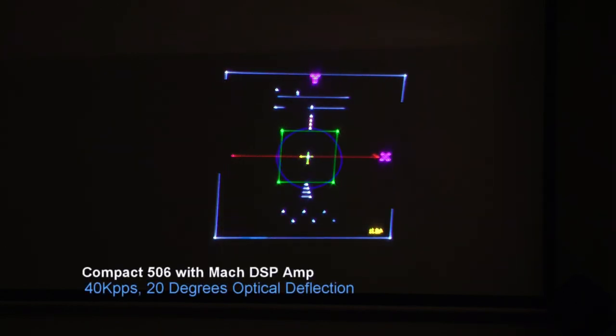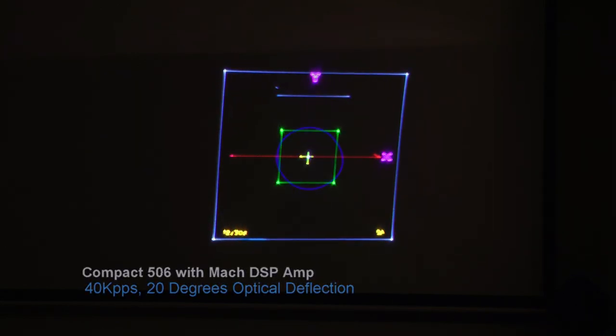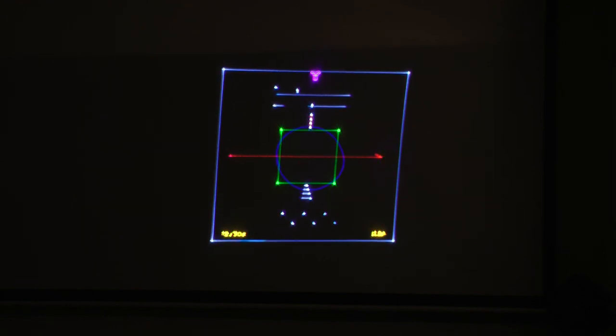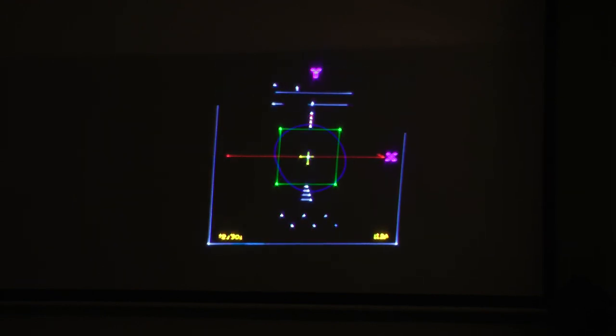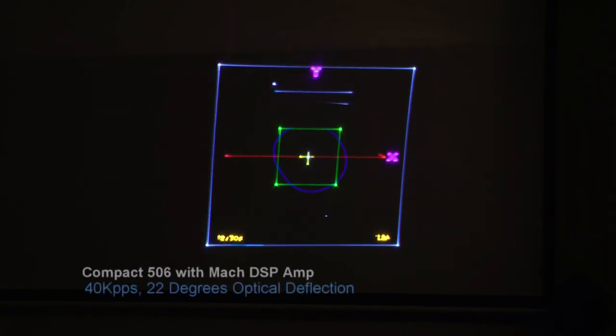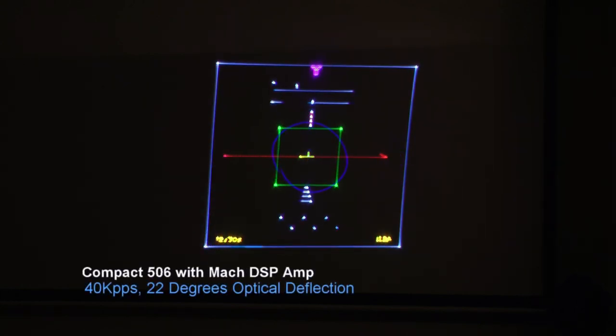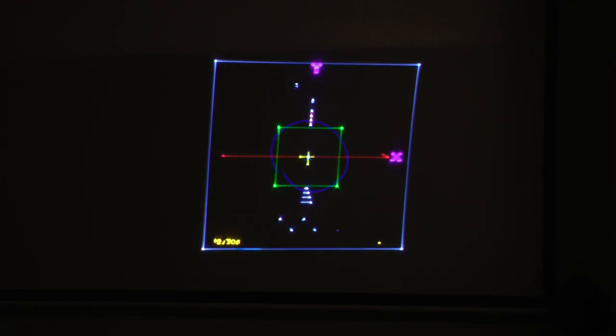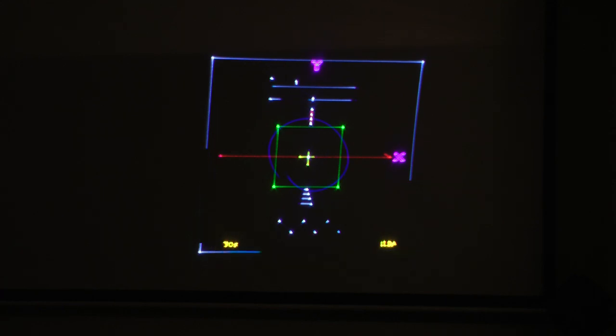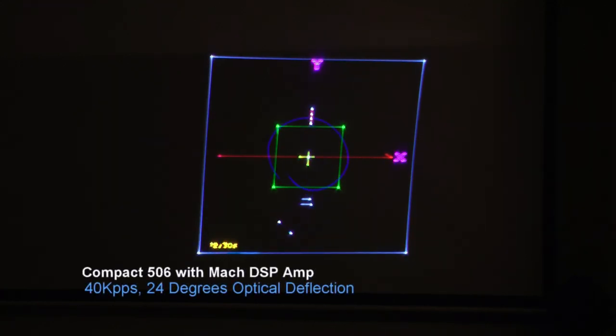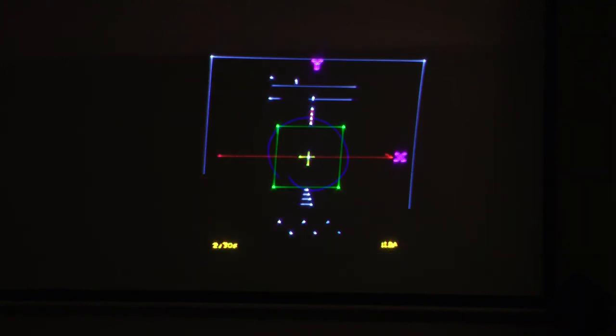20 degrees optical. 22 degrees optical. 24 degrees optical. We've got some skewing of the circle. Still quite usable at this size. Let's pick it up just a little bit more.